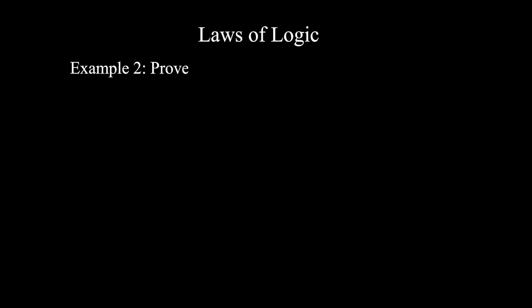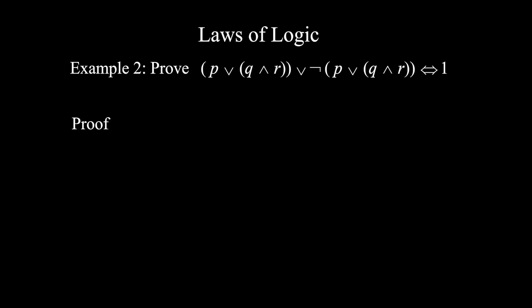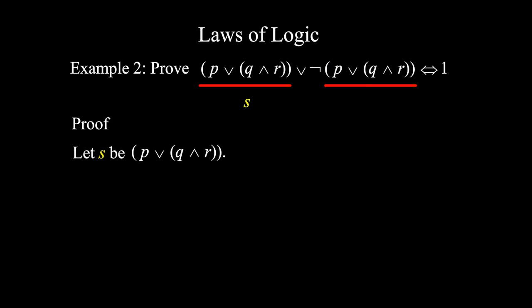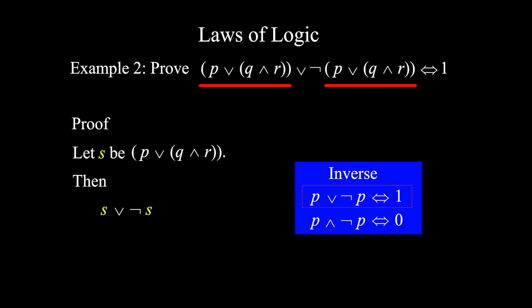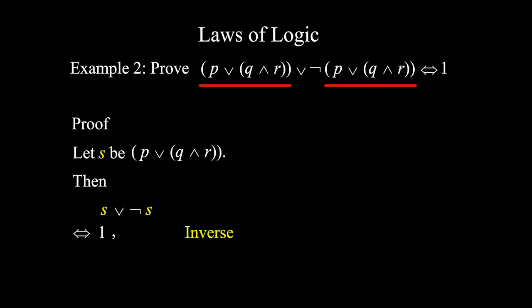Number 2. Prove that (P ∨ (Q ∧ R)) ∨ ¬(P ∨ (Q ∧ R)) is equivalent to 1. This looks complicated, but if you look carefully you'll see that the two parts are exactly the same — only one has a not. So if this is S, we simply have S ∨ ¬S. Which law can we apply? Yes, the inverse. So this is equivalent to 1 with argument inverse law. Done.